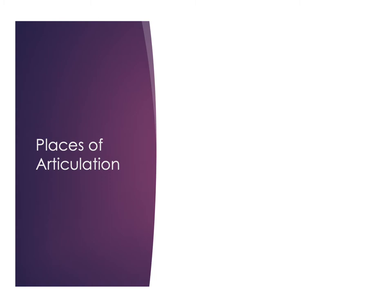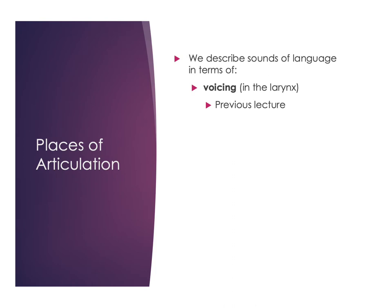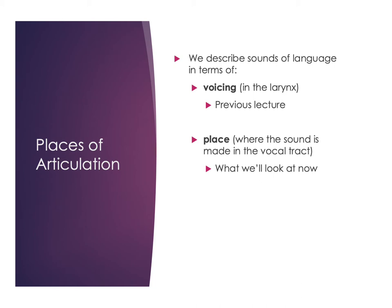When we think about places of articulation, we'll start with the three main descriptions used to describe consonant sounds in languages of the world. The first is voicing, which we talked about in the last lecture — what's happening in the larynx, whether we're vibrating our vocal folds or not. The second, which we'll focus on today, is place — where the sound is made in the vocal tract. The third, covered in the next lecture, is manner — how the sound is produced.